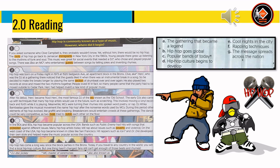Read the text quickly and match the headings A to G with the paragraphs 1 to 5. There are two extra headings which you do not need to use. Hip-hop is commonly known as a type of music. However, where did it begin? The roots of hip-hop go back to Jamaican immigrants in New York City in the 1960s. Young people grew up listening to the rhythms of funk and soul. This music was great for social events that needed a DJ who chose and played popular songs, and an MC who entertained guests between songs by telling jokes and inventing rhymes.